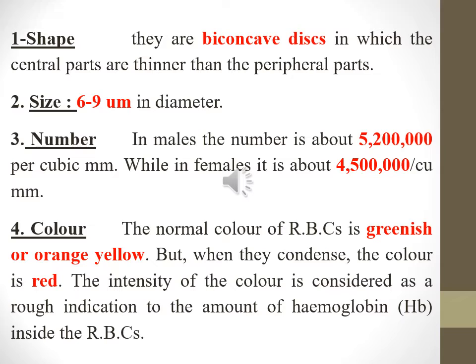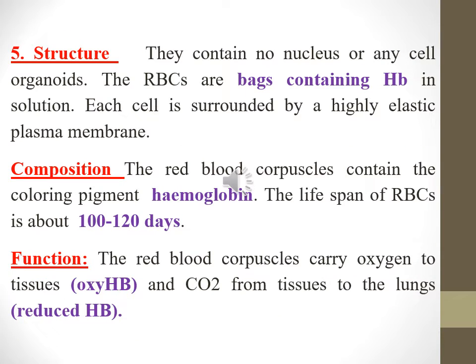The intensity of the color is considered a rough indication of the amount of hemoglobin inside RBCs. RBCs contain no nucleus or any cell organelles — they are bags containing hemoglobin in solution. Each cell is surrounded by a highly elastic plasma membrane, and the RBCs contain a coloring pigment called hemoglobin.